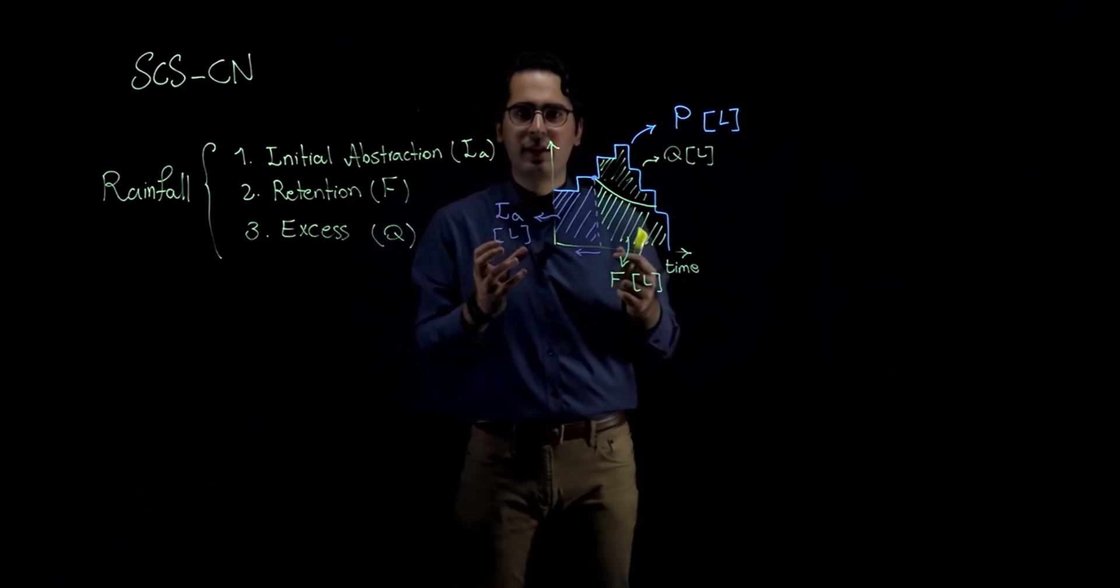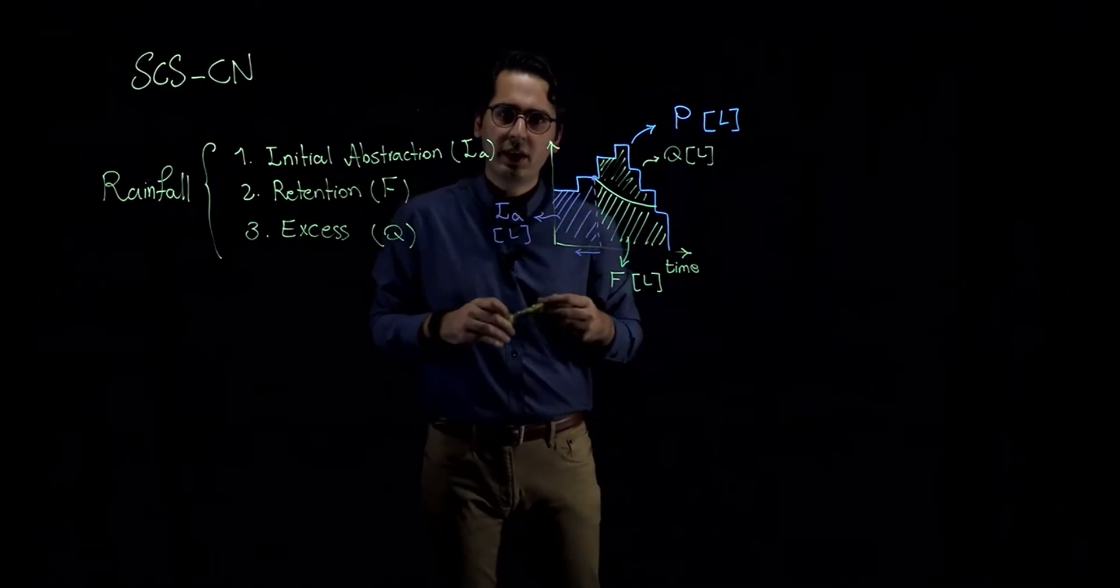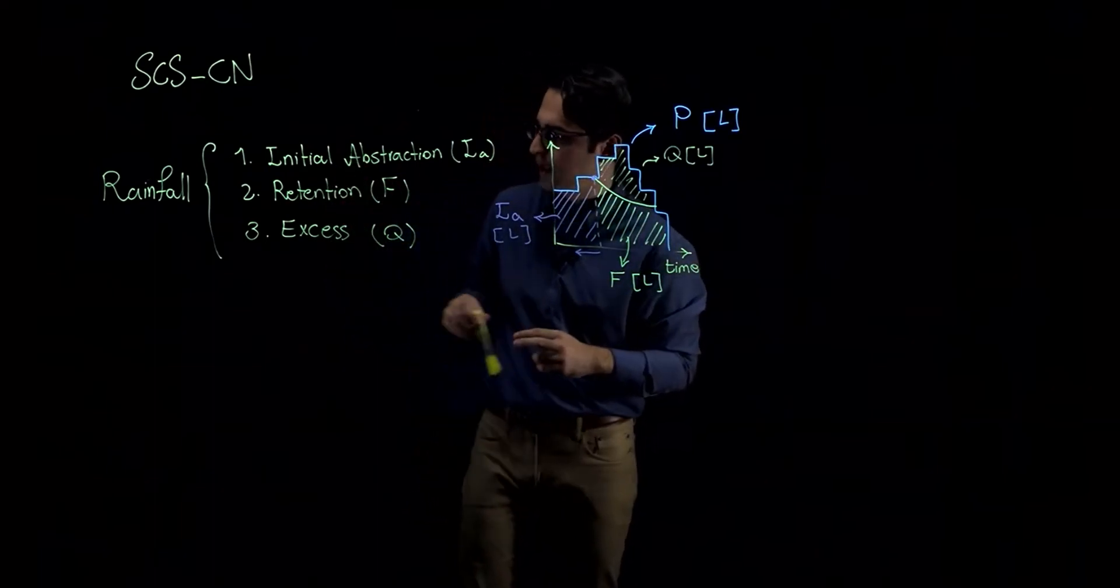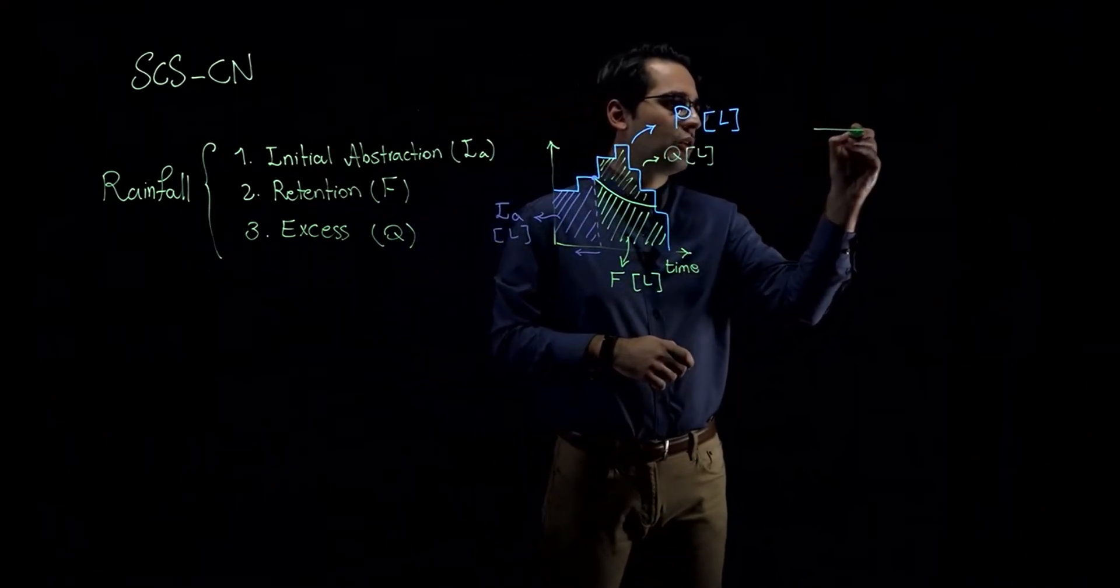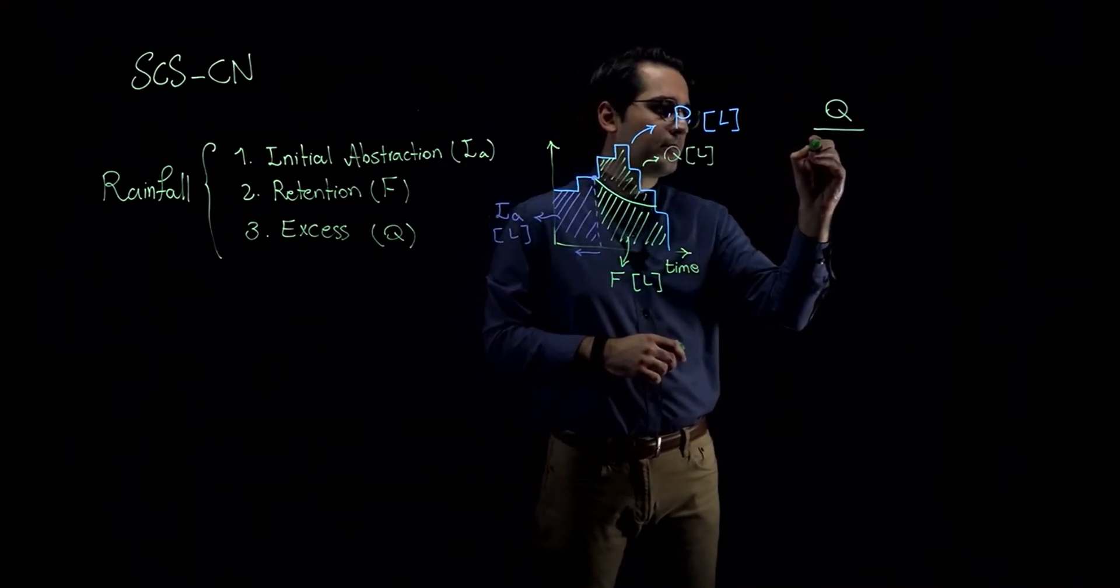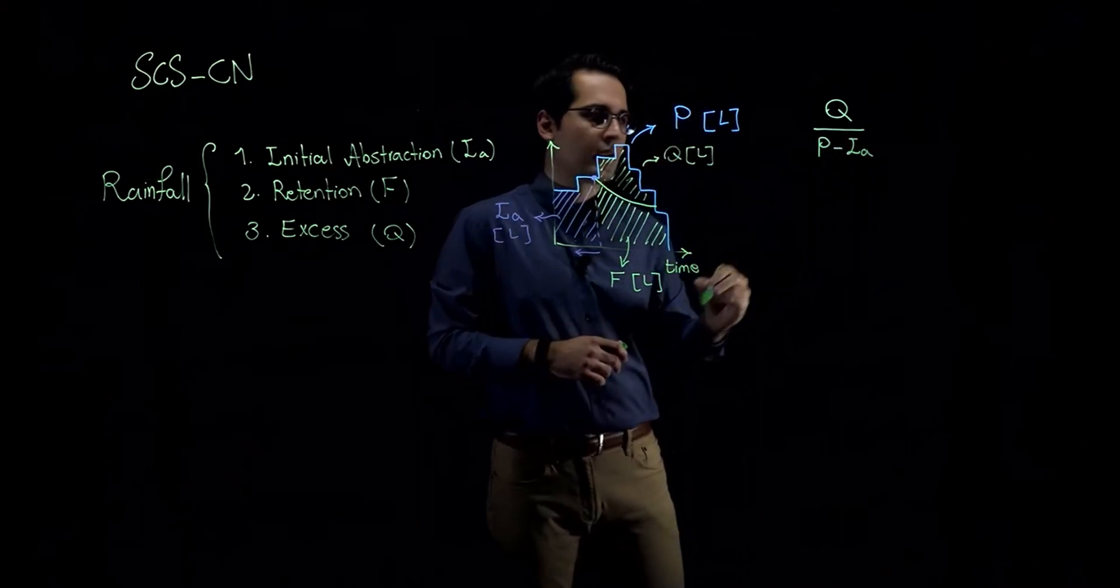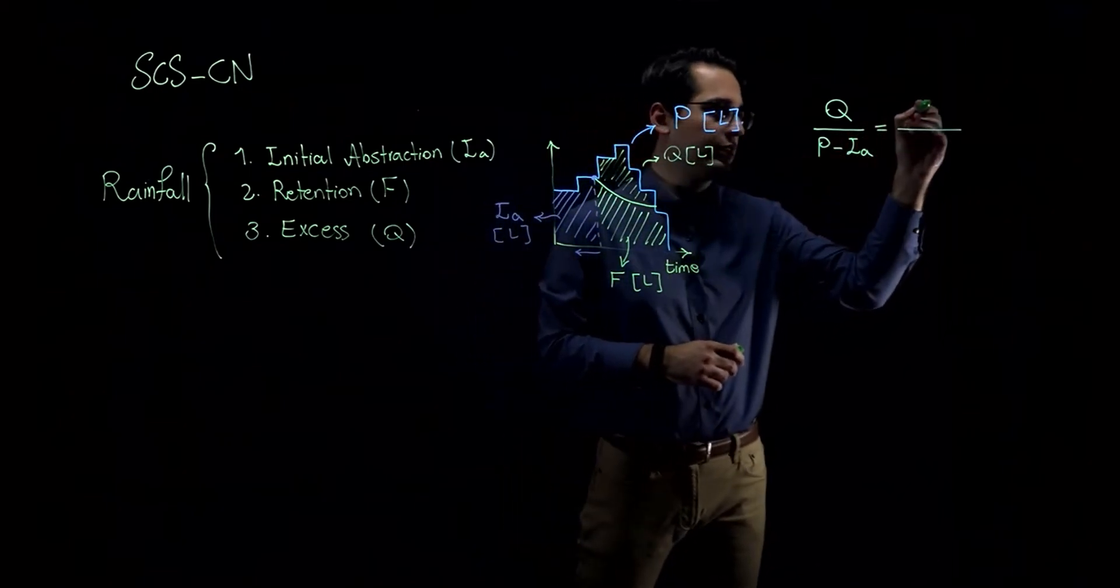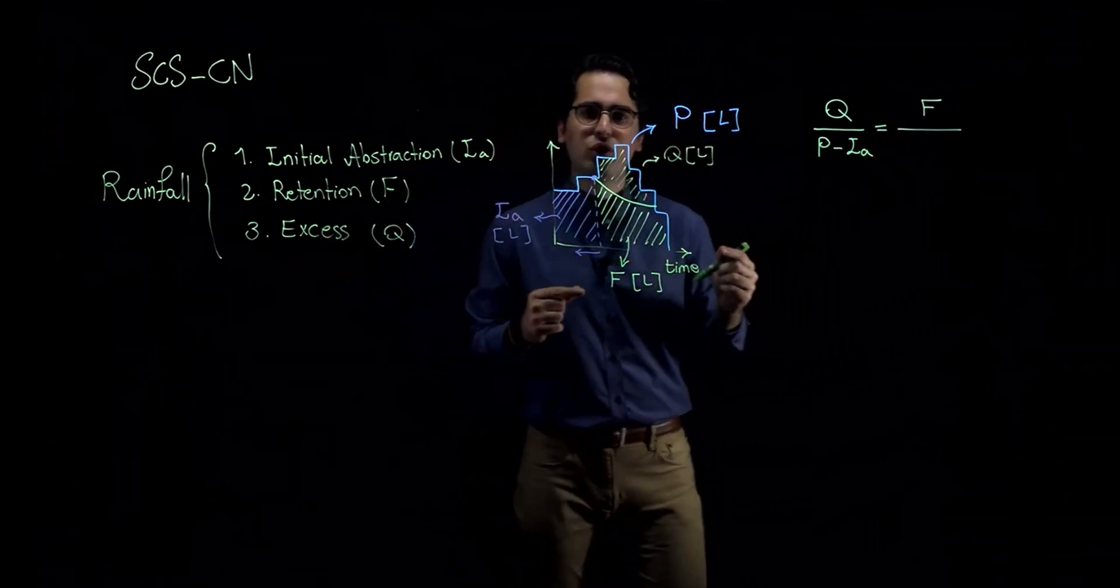Now, we want to develop or derive an equation that gives us rainfall excess or surface runoff. In order to do that, there is a main assumption behind SCS curve number method. And that assumption tells you that the amount of actual rainfall excess or actual runoff over potential runoff, which is precipitation minus initial abstraction, is equal to the amount of actual retention F divided by potential retention.